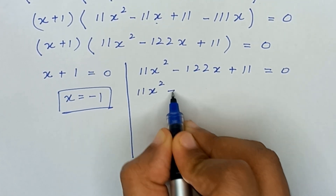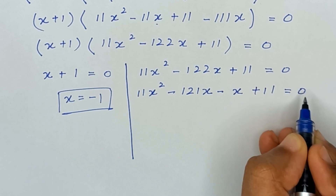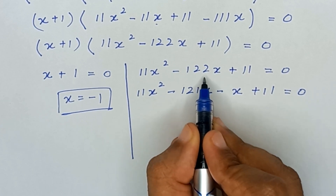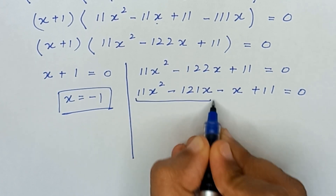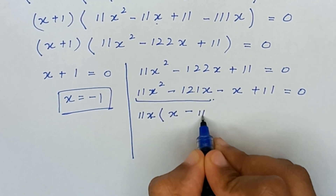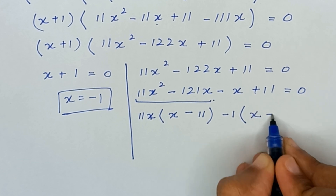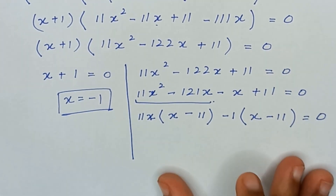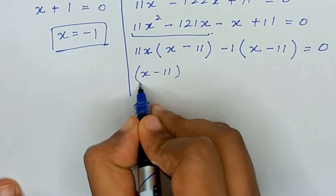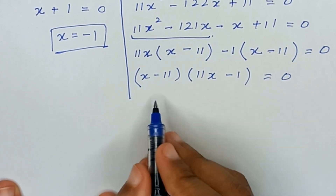We rewrite as 11x² − 121x − x + 11 = 0. When we multiply the outer terms it gives 121x², and when we sum them it gives −122x. From the first two terms, 11 and x are common, giving 11x(x − 11). From the last two terms, −1 is common, giving −1(x − 11) equals 0.